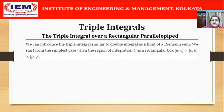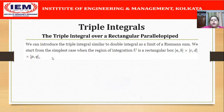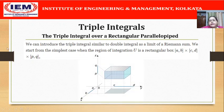We start with the simplest case where the region of integration u is a rectangular box with dimensions [a,b] × [c,d] × [p,q]. In this figure, we have this rectangular box as our region of integration u, where it extends from x = a to x = b, in the y direction from y = c to y = d, and from z = p to z = q in the z direction.